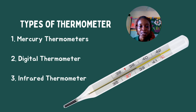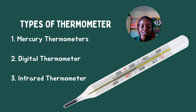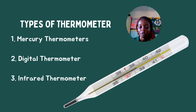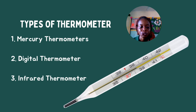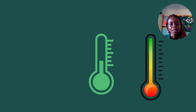Let's look at some types of thermometers. We have mercury thermometers, digital thermometers, and infrared thermometers. Mercury thermometers are the common glass thermometers that contain mercury inside for reading temperature. They are the most common ones we find in hospitals and pharmacies, and they are also used to take temperatures.